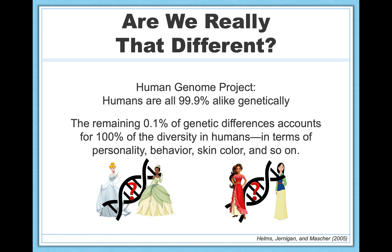Before we get to all of that, I want to start by answering this sort of philosophical question: are we really that different? Research shows that no genetic variations can be used to distinguish, for example, white people from black people, or Asian people from Hispanic people. Differences between groups are real, of course, but people expect and perceive enormous differences — much bigger differences than there actually are between people based on race, ethnicity, and so on.